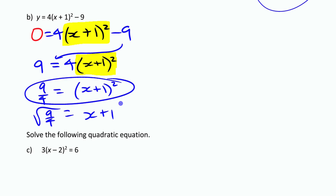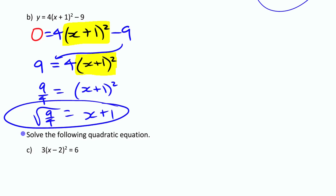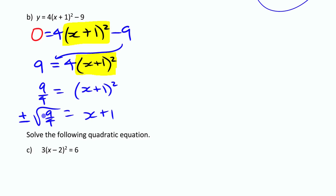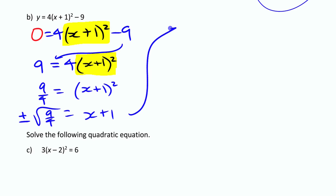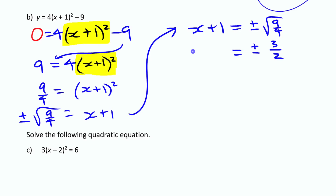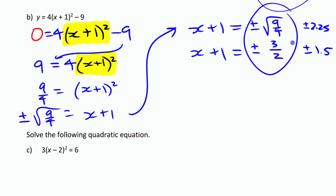If (x+1)² = 9/4, then x+1 = ± the square root of 9/4, because squaring a positive or negative gives the same positive value. The square root of 9/4 simplifies nicely: square root of 9 is 3, square root of 4 is 2, so it's ± 3/2. You could also write this as ± 1.5 or ± 2.25 — fractions or decimals are both fine.